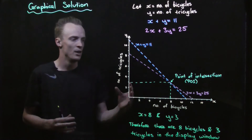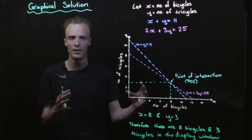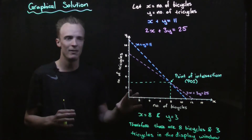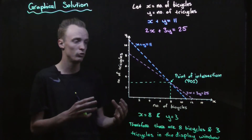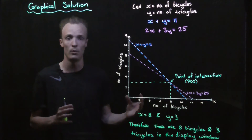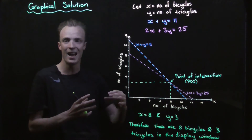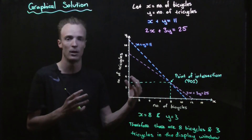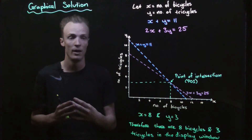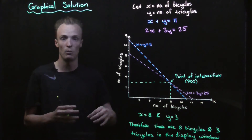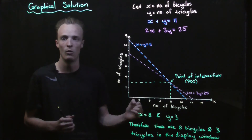The upside of this graphical solution is we can visually represent and see where the solution values are. There are some limitations though. First, it's time consuming — you still have to draw the graph and find the point of intersection. The main limitation is accuracy: in this problem we're only dealing with whole numbers, but where we're not, this method struggles to find accurate solutions when the answer isn't a whole value.